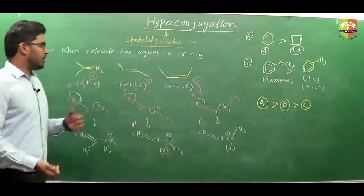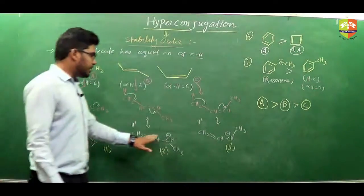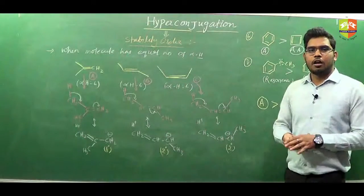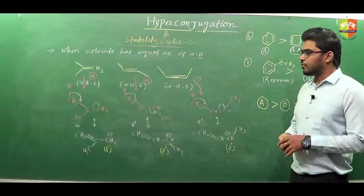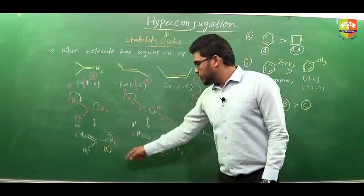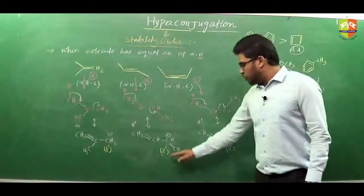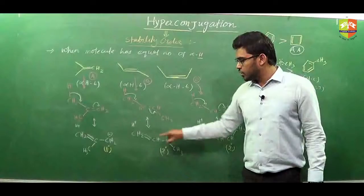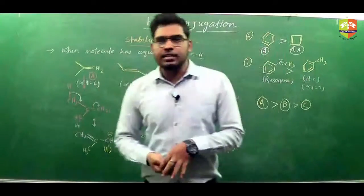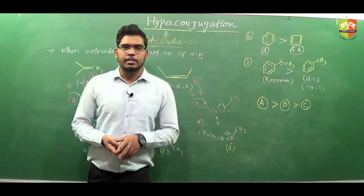So if you have equal numbers of alpha hydrogens, draw the hyperconjugative structures and compare the carbocation formed. If it is 1°, 2°, or 3°, we know the stability order of carbocations. If both give 2° carbocations, then the one with the CH₃ groups in trans position — farther apart, less repulsion — will be more stable. So the final stability order is A, B, and C.